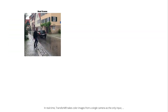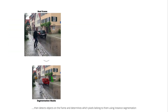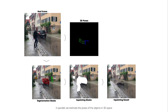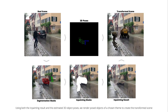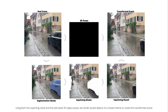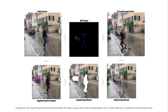In real-time, Transformer takes color images from a single camera as the only input, then detects objects on the frame and determines which pixels belong to them using instant segmentation. Detected objects are removed using video inpainting. In parallel, we estimate the poses of the objects in 3D space. Using both the inpainting result and the estimated 3D object poses, we render posed objects of a chosen theme to create the transformed scene.